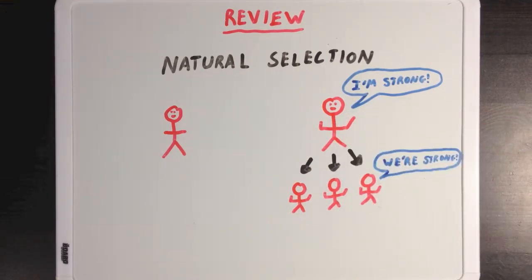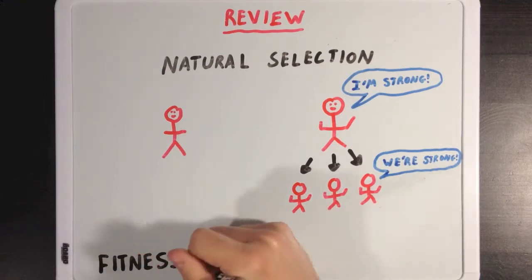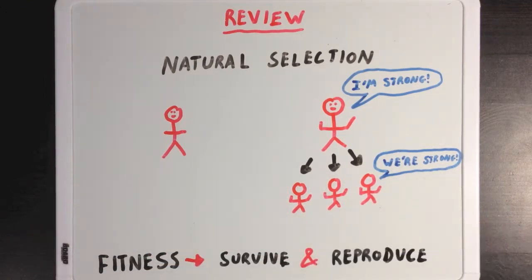Also remember that natural selection selects for individuals with high fitness, and fitness is a measure of an organism's total ability to pass on their genes to their offspring. And it's a combination of an organism's ability to survive to an age where it can reproduce, but also how well that organism can reproduce once it gets to that age.